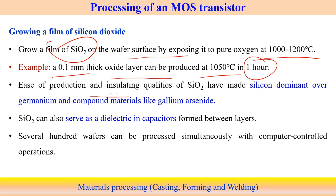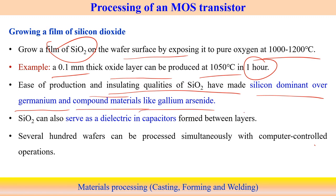SiO₂ acts as an insulating agent and is more convenient to produce compared to germanium and compound semiconductors like gallium arsenide. SiO₂ can also be used as a dielectric material in capacitors, formed between layers. This is the most well-established procedure for thin film SiO₂ production. Several hundreds of wafers can be produced simultaneously, but that requires a computer-controlled process for mass production in the semiconductor industry.